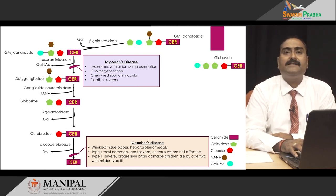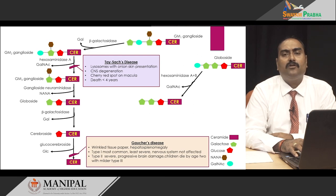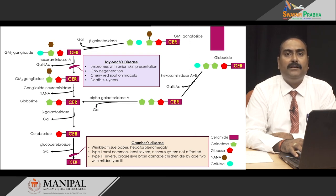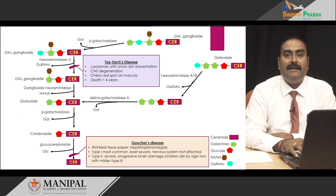Next we come to the degradation of globosides. One globoside was formed by the addition of galactose to glucocerebroside. From there, two more globosides can be formed by sequential addition of one more galactose and one more N-acetylgalactosamine. The breakdown is exactly the reverse of biosynthesis. From the globoside containing glucose, two galactose molecules, and N-acetylgalactosamine, we can obtain the globoside with only one glucose and two galactose molecules by using hexosaminidase A and B, which removes N-acetylgalactosamine. That can be further converted into the parent globoside — with just glucose and one galactose — by the enzyme alpha-galactosidase A, which removes the galactose residue. Deficiencies in hexosaminidase A or alpha-galactosidase A cause two more disorders.